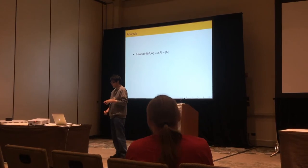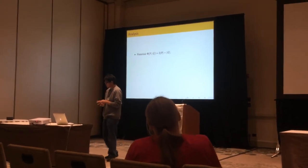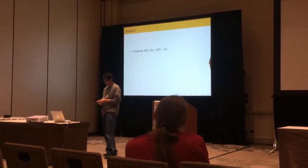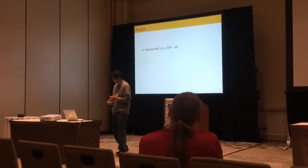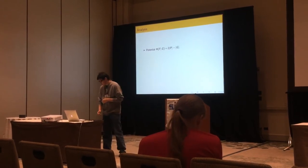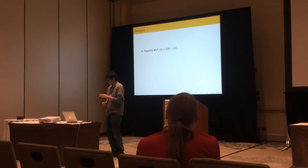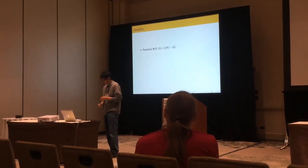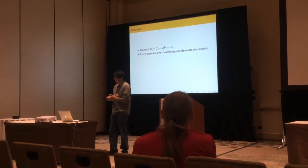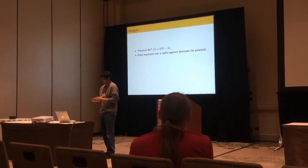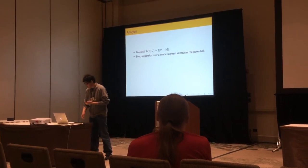So we can consider analysis as well. We can define the potential to be two times the number of vertices in the polygon minus the number of vertices in the image graph. This number is linear in the number of vertices, and it is always non-negative. And each expansion of a useful segment will always decrease this potential.